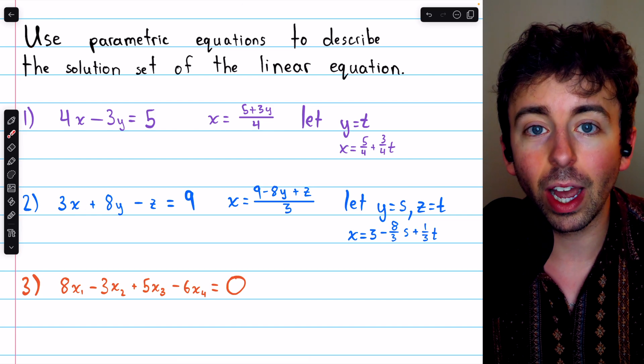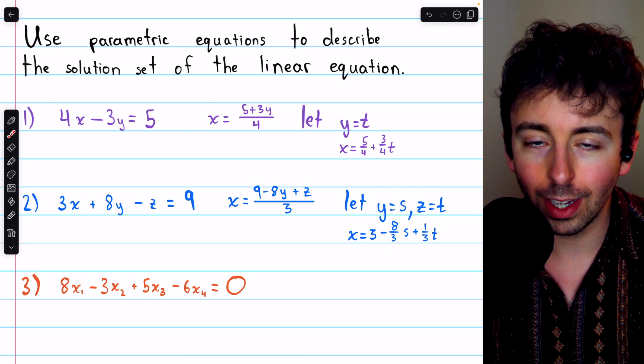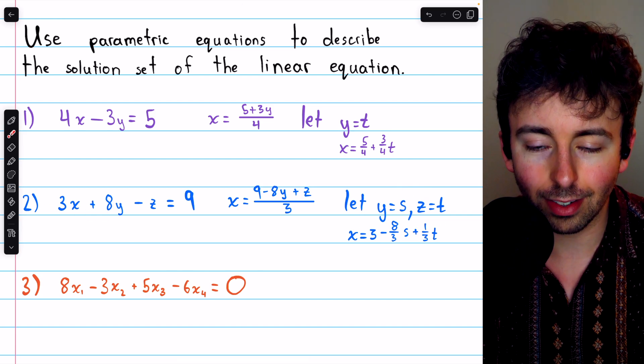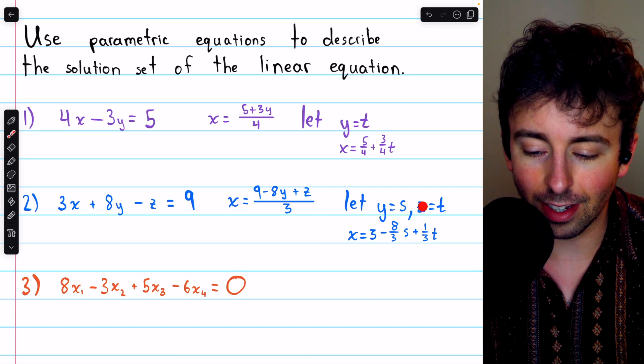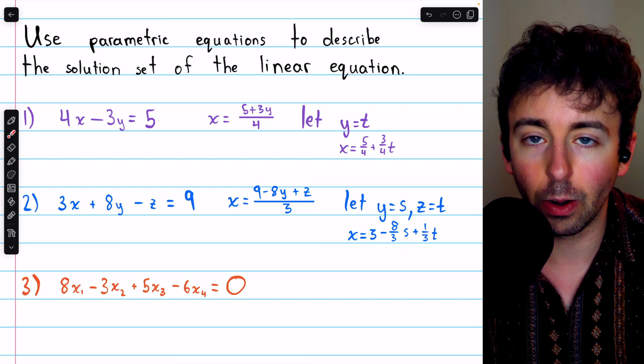So any triple x, y, z of this form is a solution to this linear equation. y and z can be whatever they like, and x is calculated accordingly.